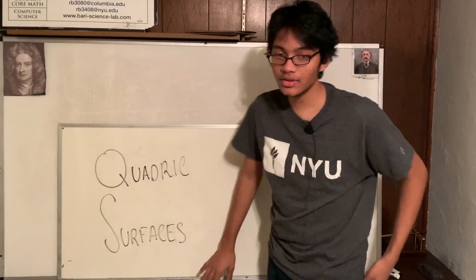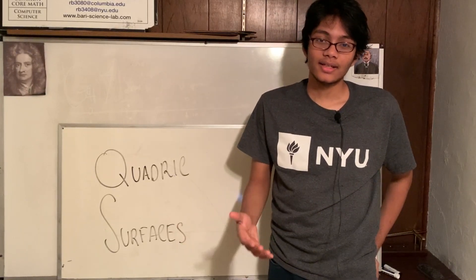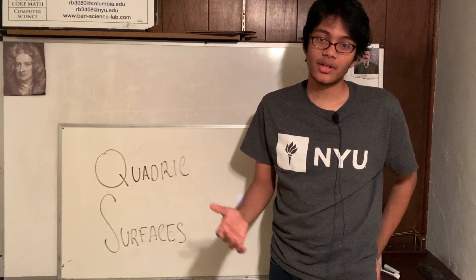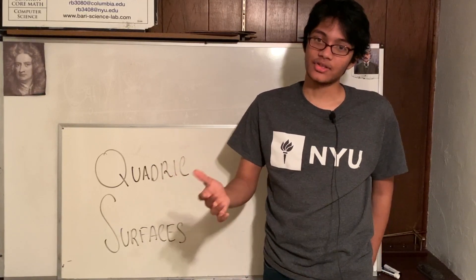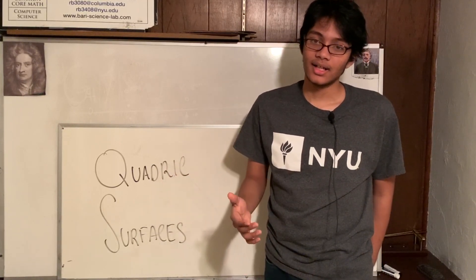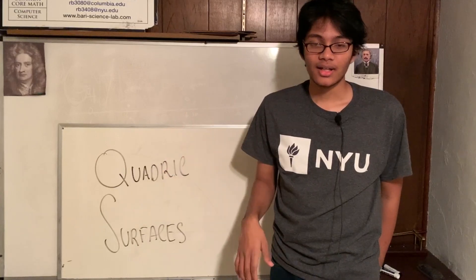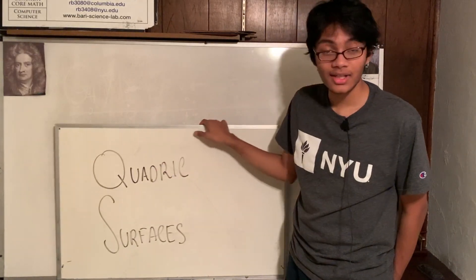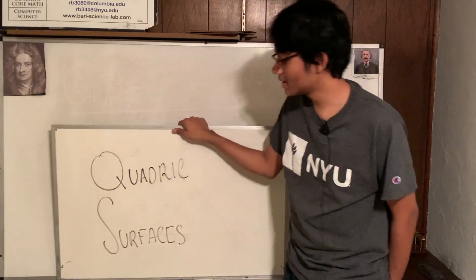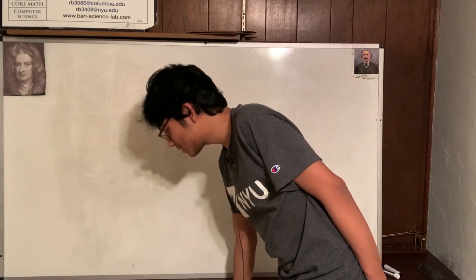Hopefully you remember the conic sections — the quadric surfaces are a three-dimensional analogy of the conic sections. You'll see what I'm talking about; don't worry about the difficult language. It's going to be very nice very soon. So let's start with a very simple surface.